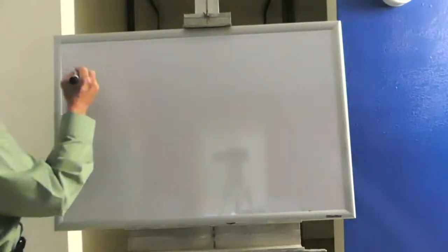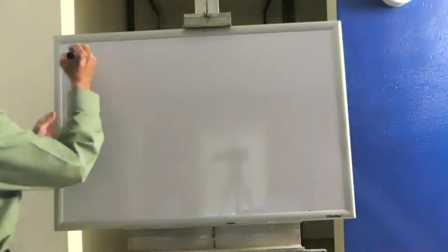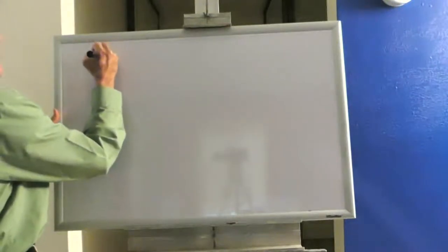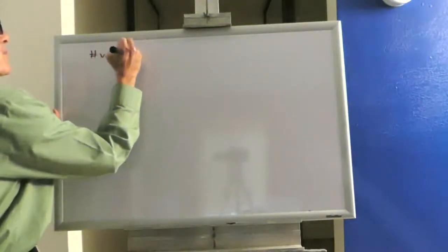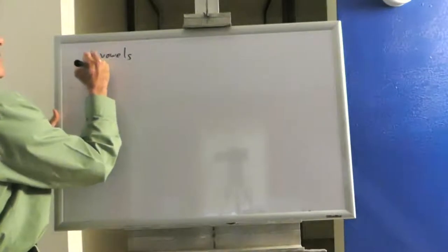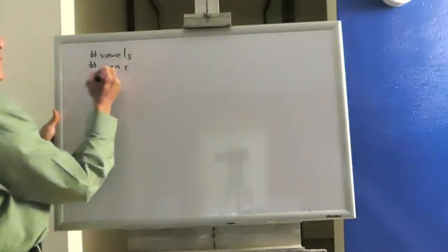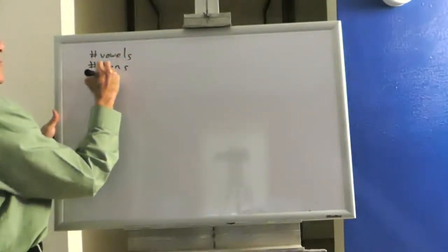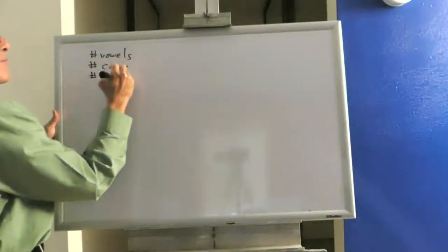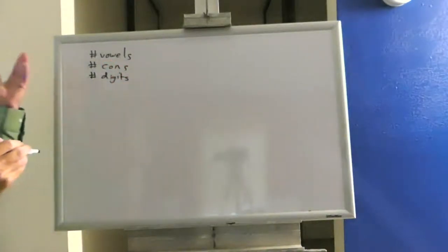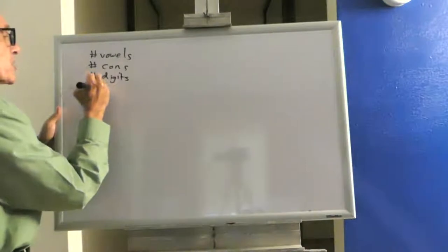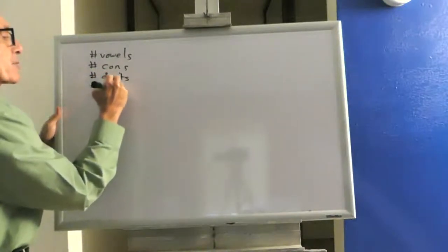Let's make a plan for the frequencies program. We'll start by figuring out what we need to keep track of. For each sentence that the user enters, we need to keep track of the number of vowels, the number of consonants, the number of digits, and anything that's not a vowel, consonant, or digit, we'll call that others.